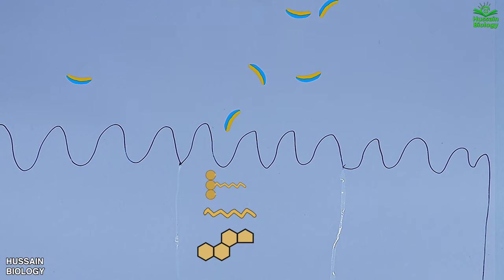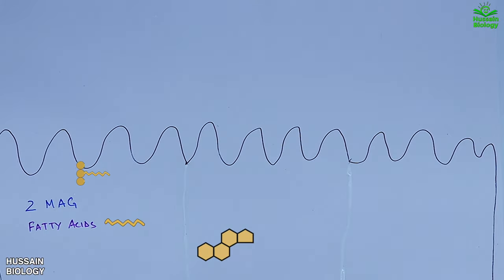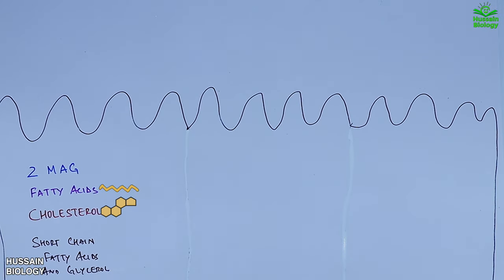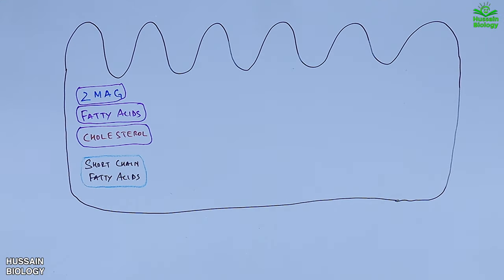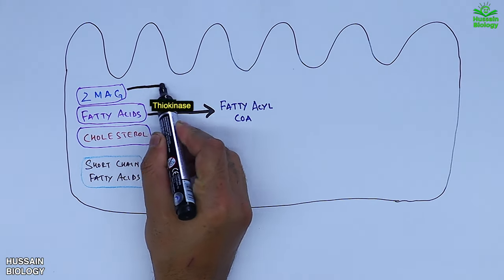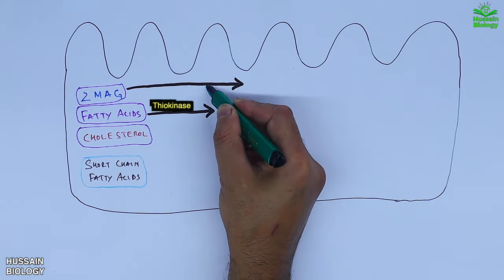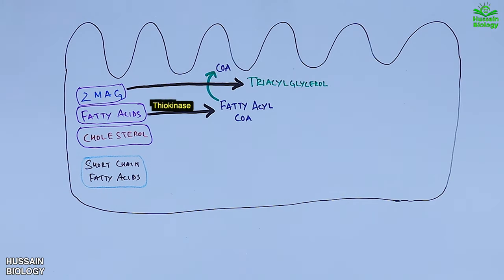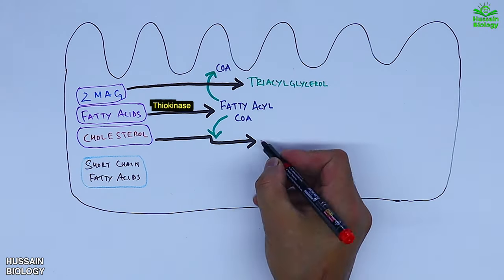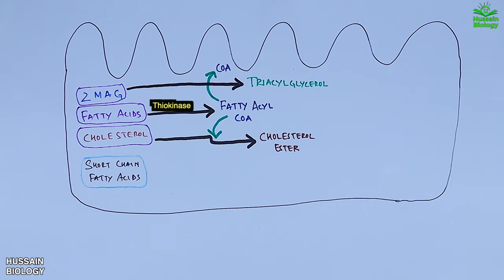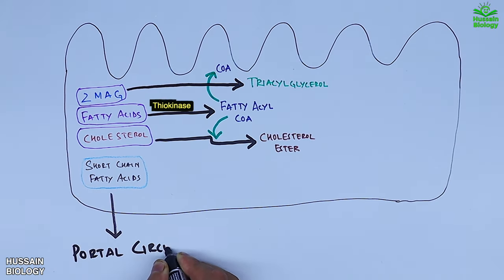Within the enterocytes, we have 2-MAG fatty acids, cholesterol, and short-chain fatty acids. The fatty acids are acted upon by thiokinase enzyme, producing fatty acyl coenzyme A. The 2-monoglyceride is then acted upon by fatty acyl coenzyme A to produce triacylglycerol. The same fatty acyl coenzyme A acts on cholesterol to produce cholesterol ester. Short-chain fatty acids are directly absorbed through portal circulation.